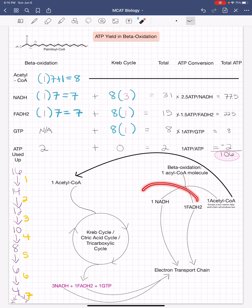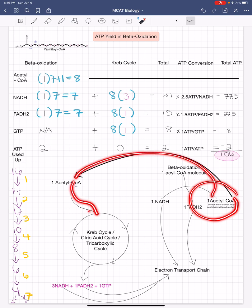Both NADH and FADH2 will go to the electron transport chain, while the acetyl CoA molecule will go through the Krebs cycle and produce NADH, FADH2, and GTP.